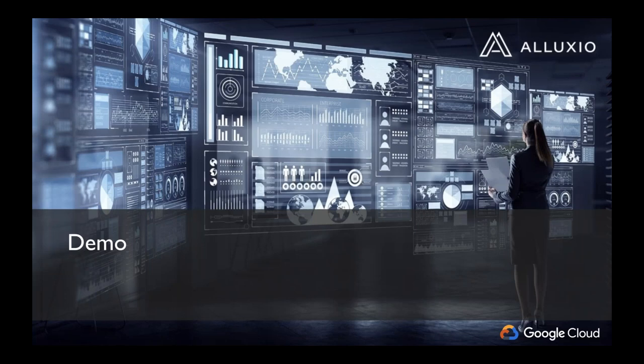For ephemeral clusters, you can set a priority in Alluxio so that if data is present both in Google Cloud Storage and HDFS, you read from Google Cloud Storage — meaning you won't go over a slow network to HDFS, but will use a faster network within the same cloud region.